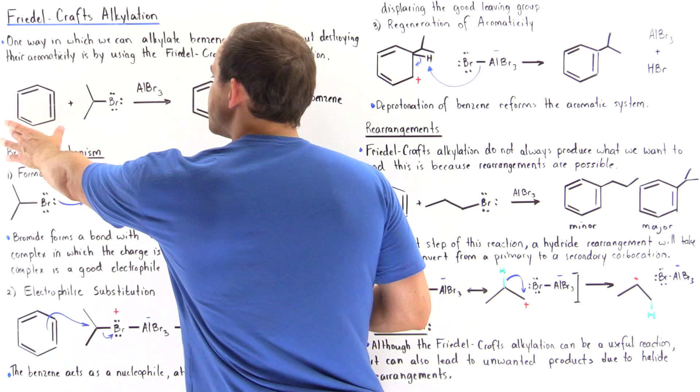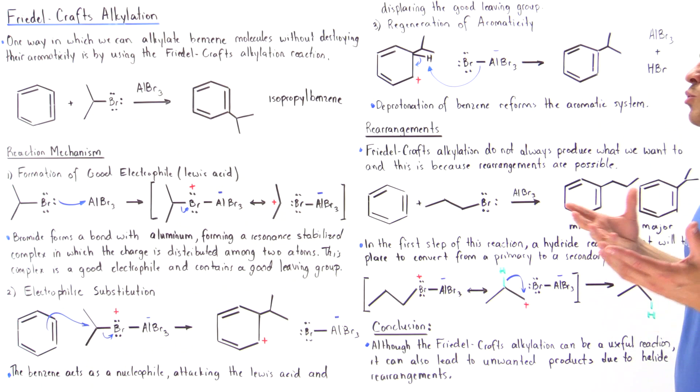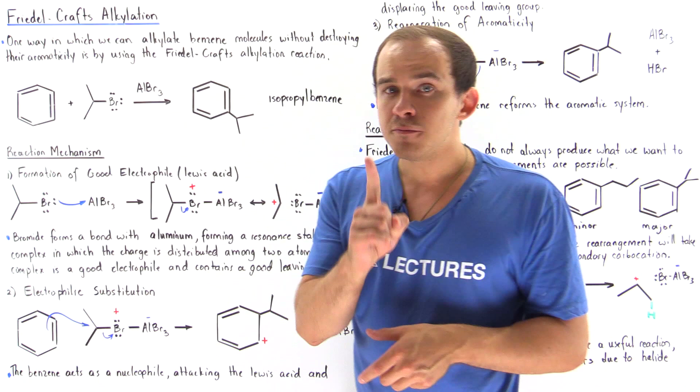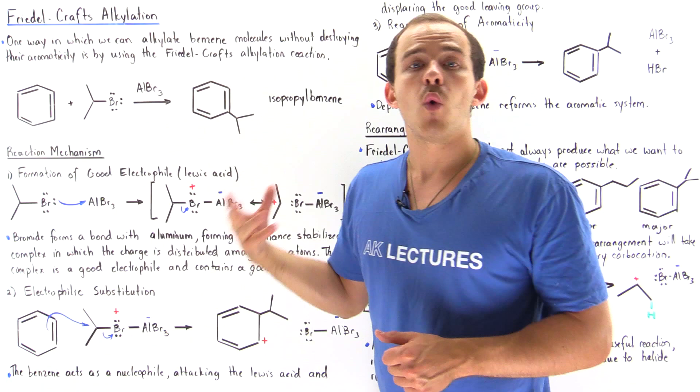To illustrate this, suppose we take a benzene ring, but instead of using the isopropyl group, we use propyl bromide. We find that two products form: a minor product and a major product. Surprisingly, the major product is the same product that was formed using isopropyl bromide. The question is: why? What takes place?